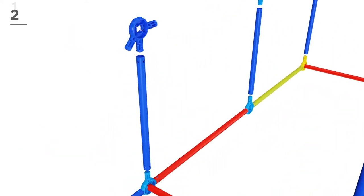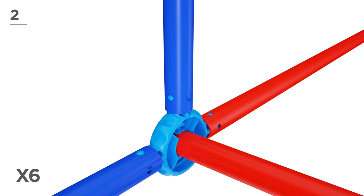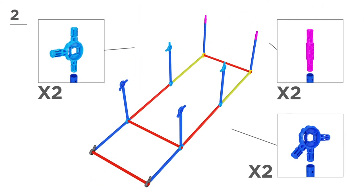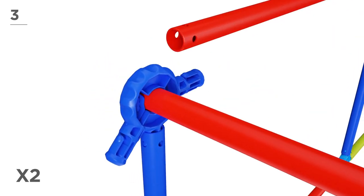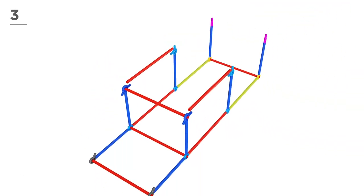Now, with 6 navy poles, 2 pink connectors, 2 navy connectors, and 2 blue connectors, build the sides like this. You're doing great!